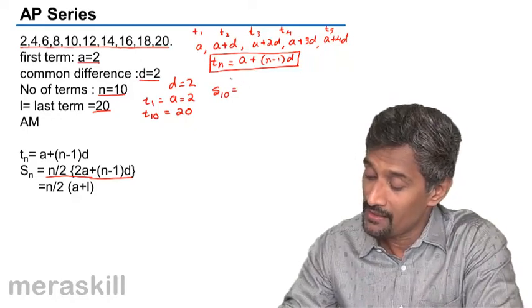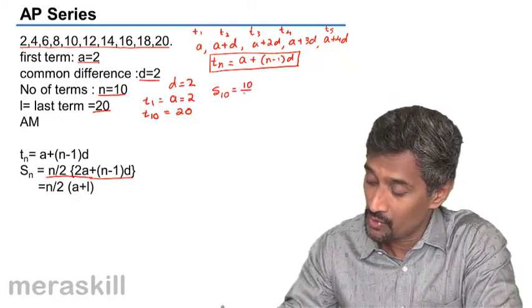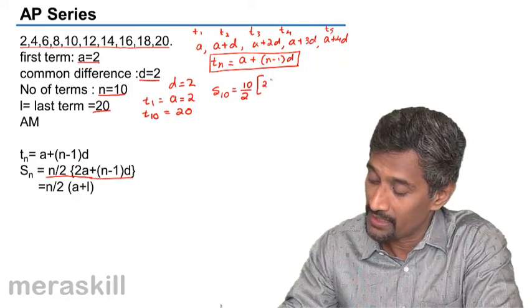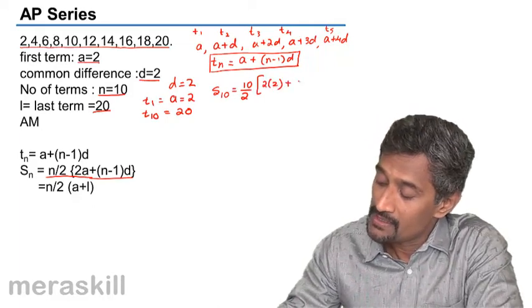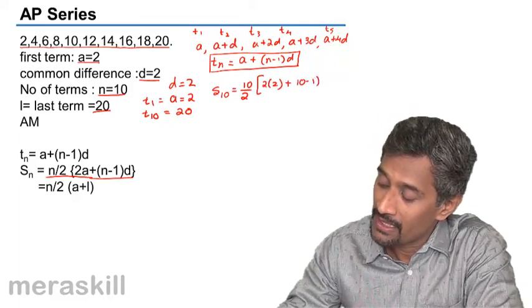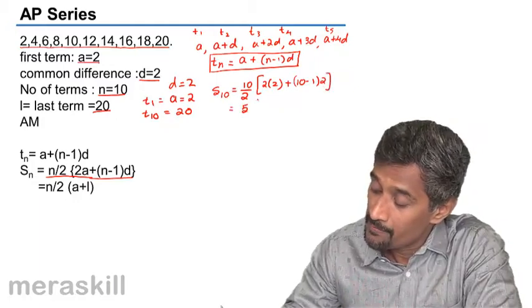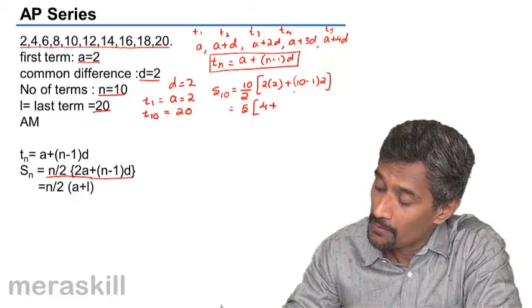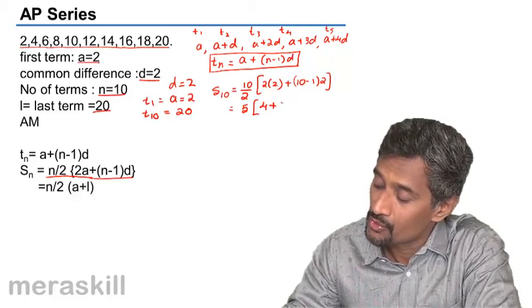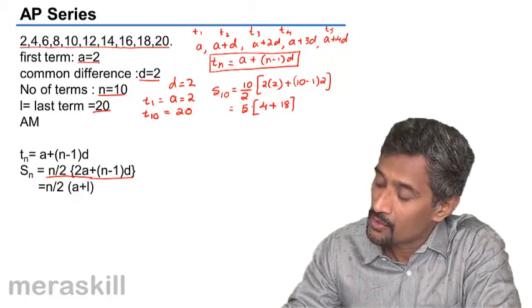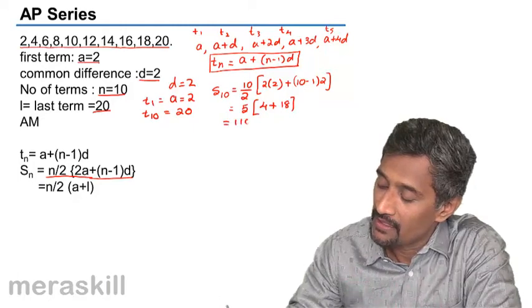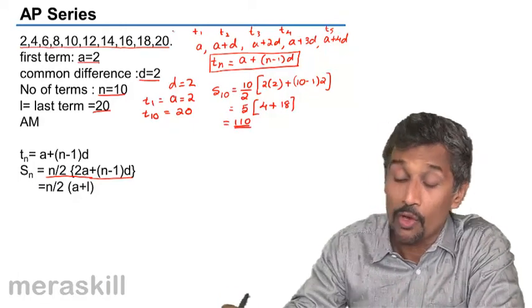In this case, it is going to be N is nothing but 10. So, 10 by 2 into 2A, that is 2 into 2 plus N minus 1, that is 10 minus 1 into D. D would be 2, which would be 5 into 4 plus 10 minus 1, 9 into 2, 18. So, 18, 22 into 5, 110 would be the sum of all these numbers.